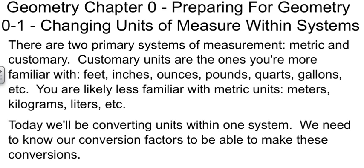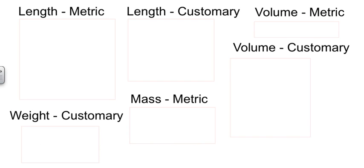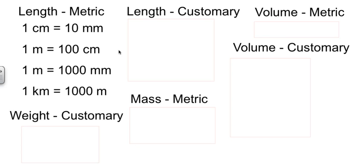To do that, we need to know our conversion factors. So I've got here, grouped by what kind of thing they are, some conversion pieces. In metric, things go by factors of 10. One centimeter is the same as 10 millimeters. One meter is 100 centimeters. One meter is also 1,000 millimeters. And one kilometer is 1,000 meters.